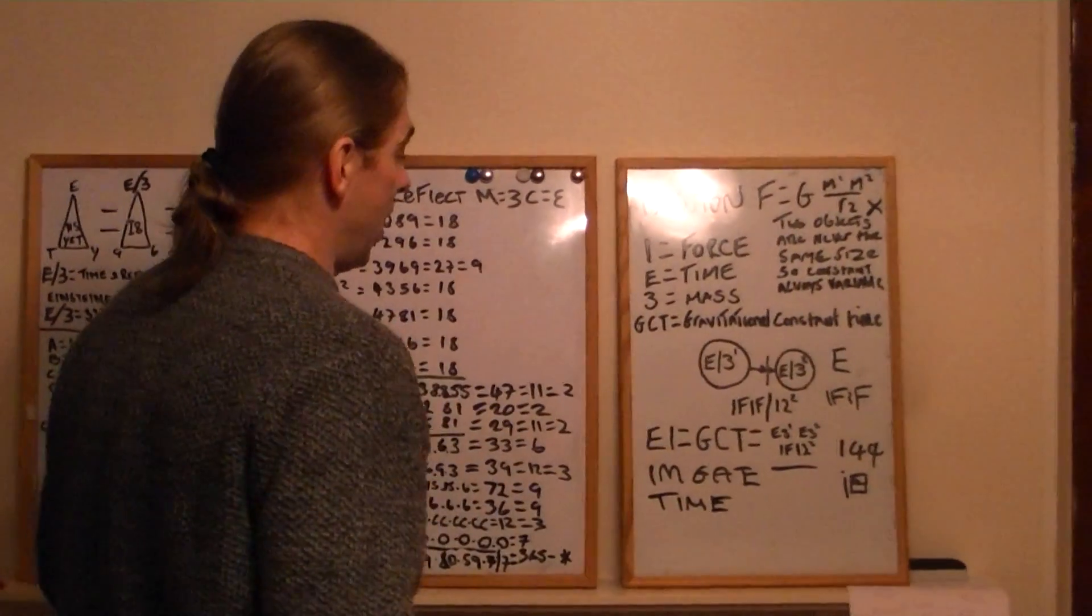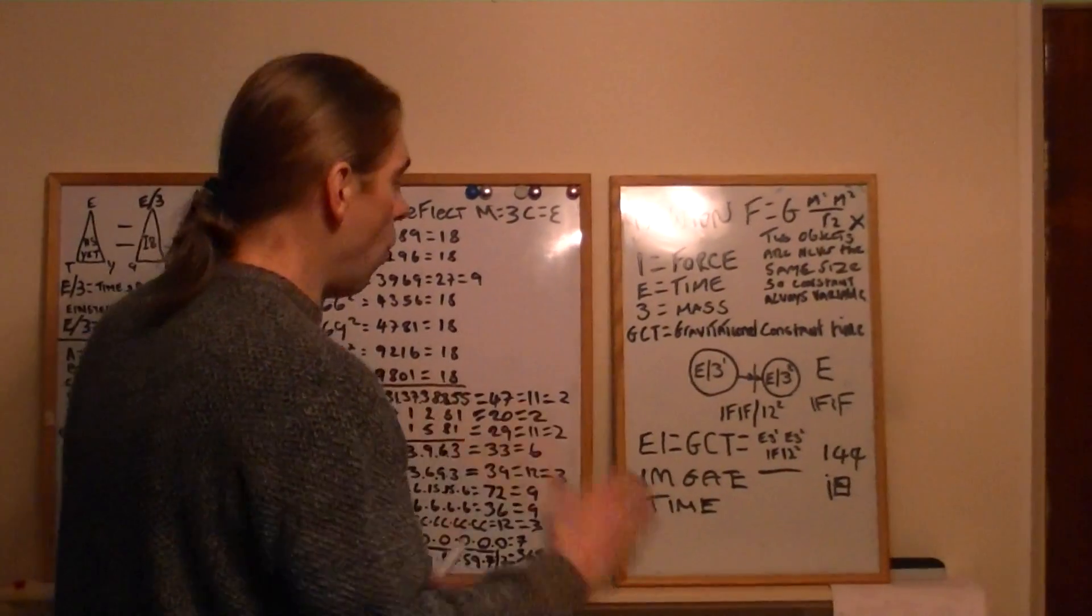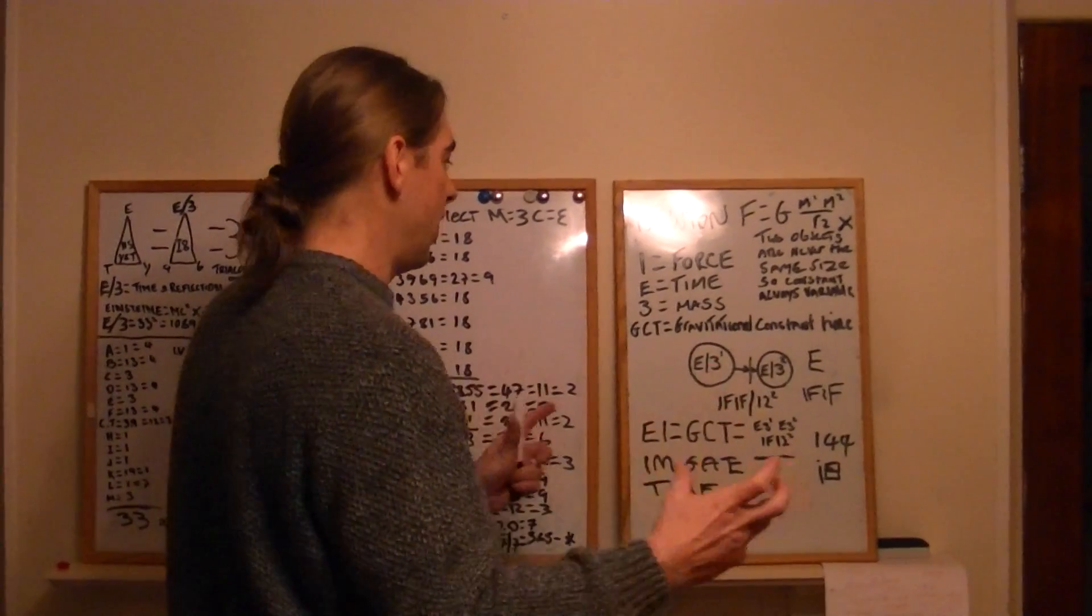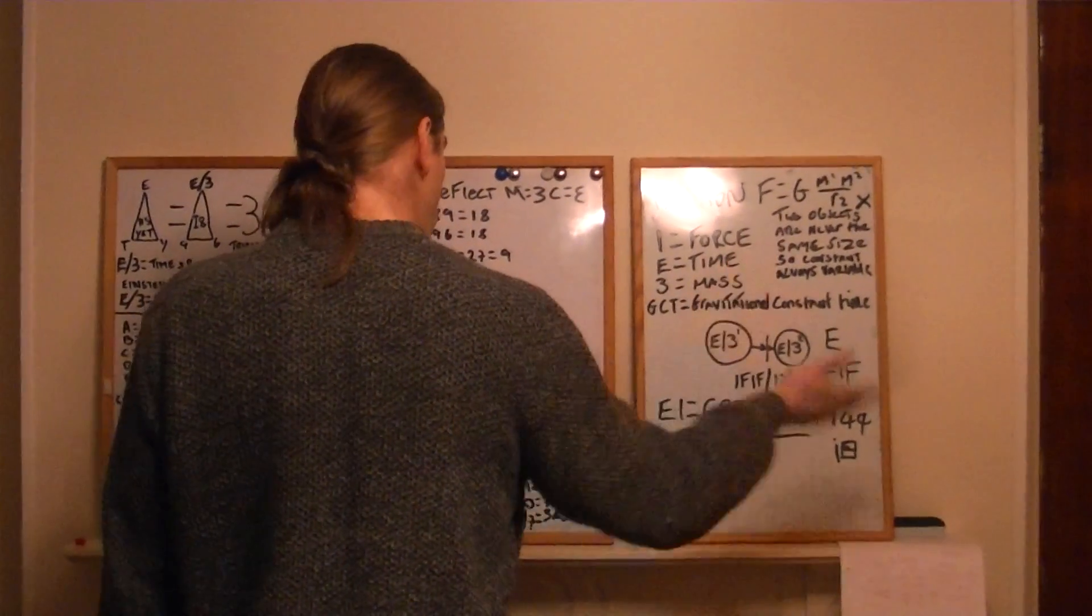So, there's the answer. That's the answer to Newton. If you want to find a variable constant, because it's always variable, because two objects are never the same, it would be that answer. If 12 squared.